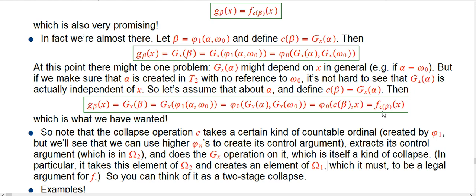In particular, in this case, it takes an omega 2 and creates an omega 1. Then, that two-stage process has created C of beta, and that's a legal argument for the fast-growing hierarchy.